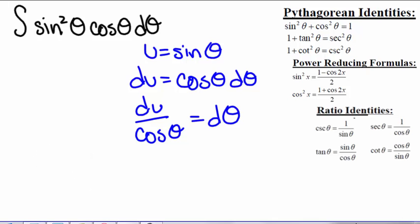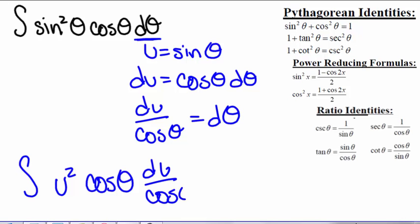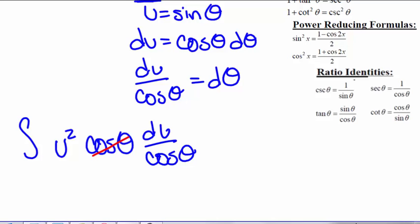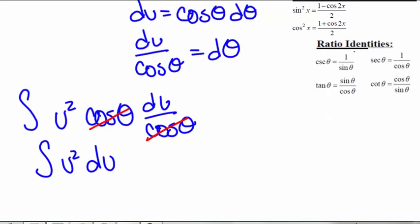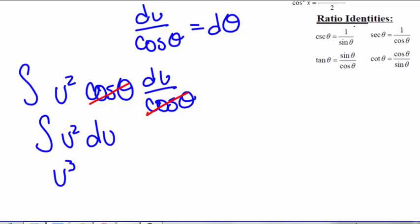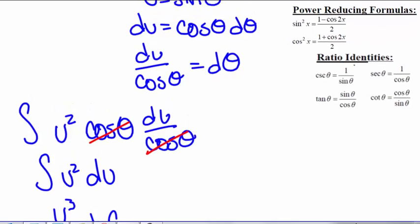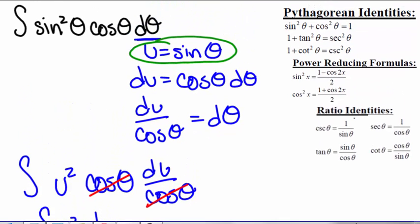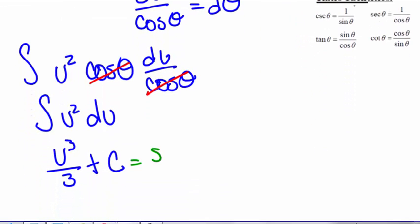When we plug this in, we get the integral. Since sine of theta is u, u squared equals sine squared theta. So we have u squared times cosine of theta, and d theta is du divided by cosine of theta. Our cosine of thetas cancel out, and we're left with the integral of u squared du, which we can integrate. That is u cubed divided by 3 plus a constant. Plugging back in, u is sine of theta, so we get sine cubed of theta divided by 3 plus a constant.